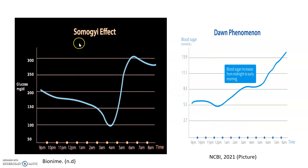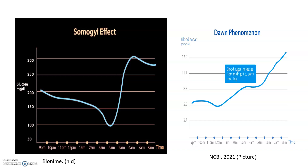Let's look at the Somogyi effect. This individual will get their insulin before they go to bed. With the insulin, the blood glucose drops around 3 a.m. What occurs is that the body recognizes that blood glucose is low, so then the cascade starts by turning glycogen into glucose — this is where the liver comes in. Glycogen is then converted into glucose, and then you see the blood sugar rises and is elevated in the morning.